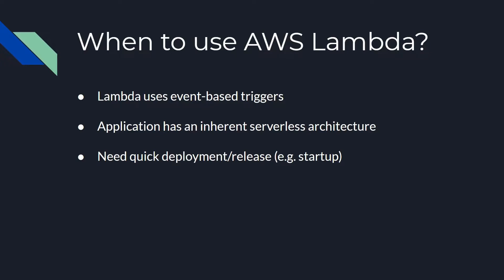This relates to our second point in that your application has an inherent serverless architecture, which is generally event-based. Another reason why developers may choose to use AWS Lambda is for the quick deployment and release time. For instance, if you're a startup and you need to quickly set up a pipeline to process file uploads, AWS Lambda significantly reduces the development time by managing most of the deployment for you, so all you need to worry about is writing great code.